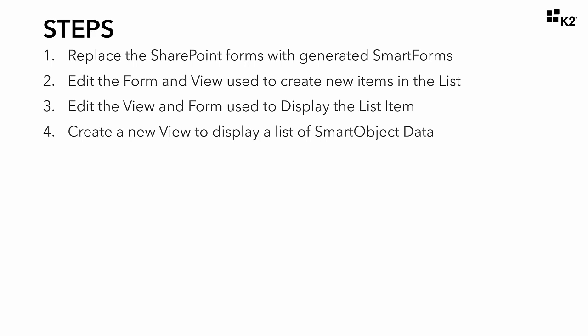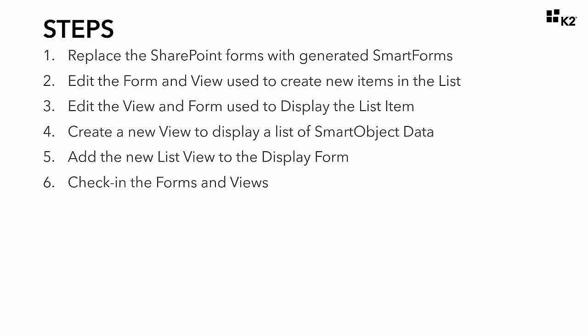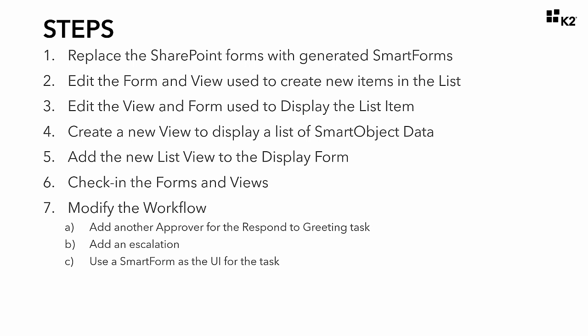By creating this list view tied to the Hello World smart object, we will use Step 5 to demonstrate how to pull that view into the list item display form. We will need to expose the changes to the views and forms from the previous steps to our users, so in Step 6 we will walk through how to check in those changes. Step 7 will lead us into multiple steps of modifying the workflow to add another approver, add escalation, and enable a smart form to function as the user interface. Then in Steps 8 and 9, we will deploy the workflow to the K2 environment and test the application respectively.